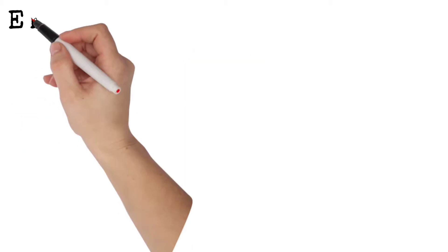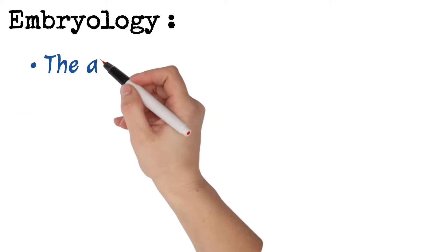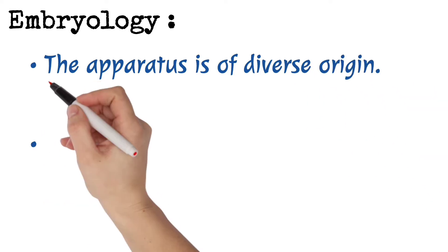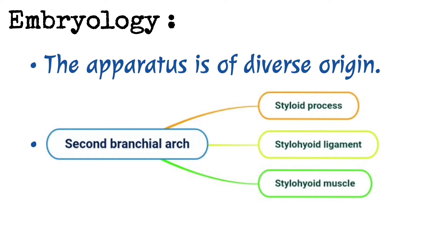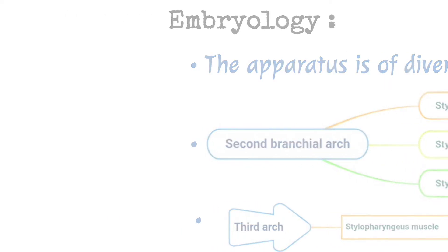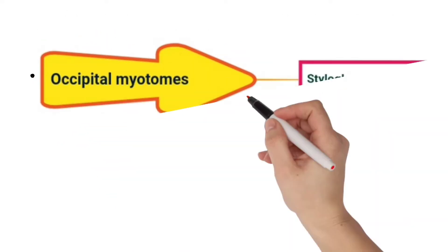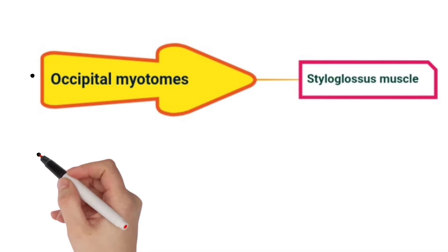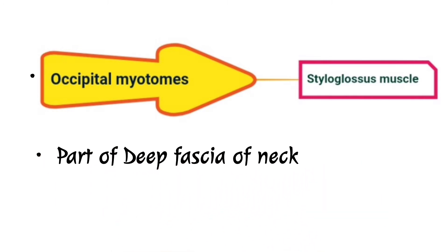Embryology. The apparatus is of diverse origin. The styloid process, the stylohyoid ligament, and the stylohyoid muscle are derived from the second branchial arch. The stylopharyngeus is from the third arch. The styloglossus is from the occipital myotomes, and the stylo-mandibular ligament is from a part of the deep fascia of the neck.